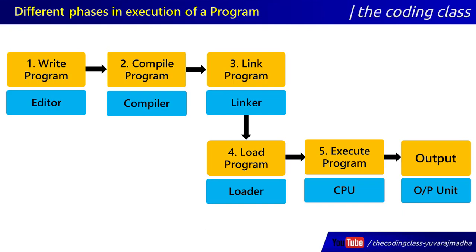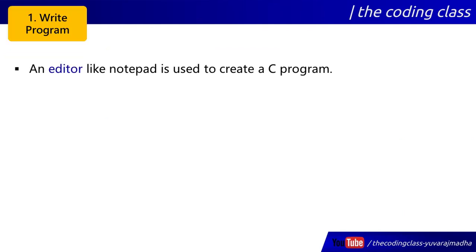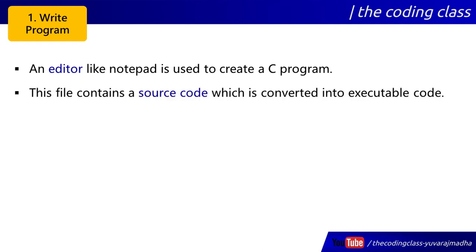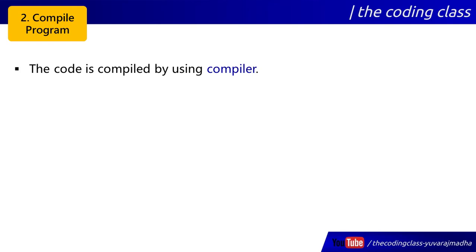So these are the five phases: write and type using the editor, then use the compiler, then the linker, then compile the program with header files, and then use the CPU. The code is compiled by the compiler, and the compiler is a type of translator.